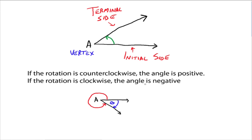If the rotation is counterclockwise, like we're doing here with the green, then the angle is positive. Same idea down here — if we go counterclockwise to measure this way, that angle would be positive. Whereas if we measure the angle clockwise, say we start here and come down this way, this is theta. Because we're measuring in a clockwise fashion, the angle theta in this case would be negative. So measuring counterclockwise, you get positive angles; measuring clockwise, you get negative angles.